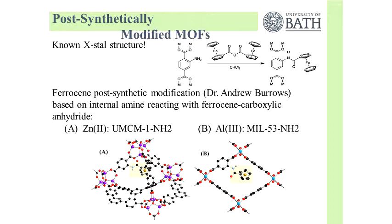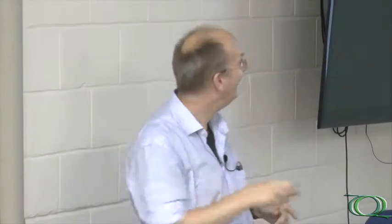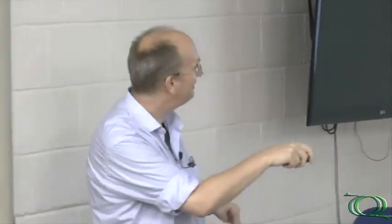You can see the ferrocene is in the cage here in the Zn-4 node. This is MIL-53, an anhydride and ferrocene. You can ask, how do you know the ferrocene is there? The drawing here implies the crystal structure, but we don't have the crystal structure. This is just a pretty picture. All we have is elemental analysis.